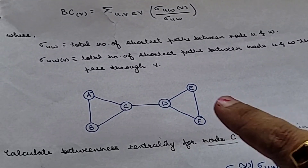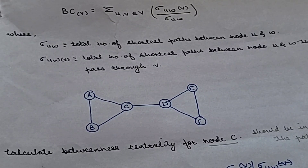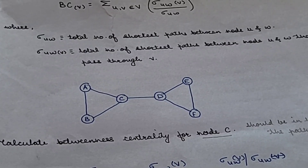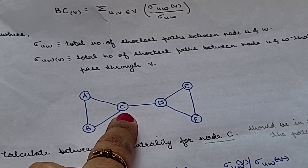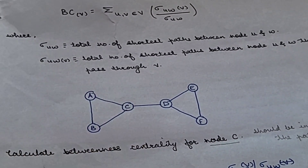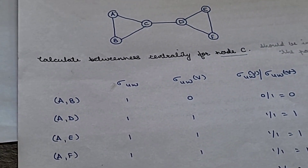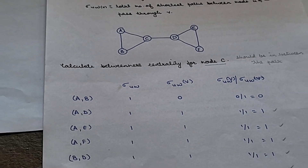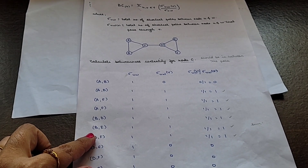This is a simple graph with 6 nodes. We are supposed to find out the betweenness centrality for node C. We will consider this node C. Firstly, we will be writing out all the possible paths.